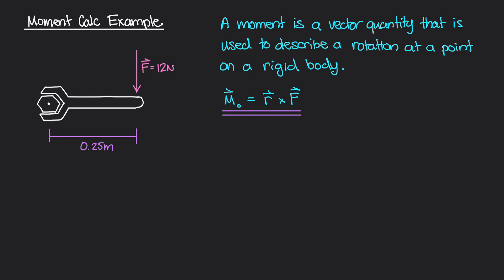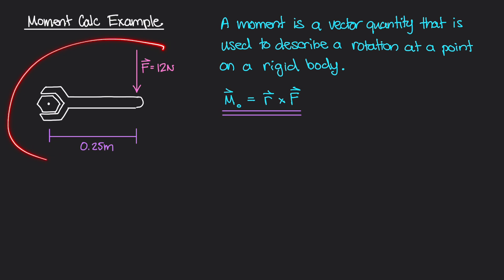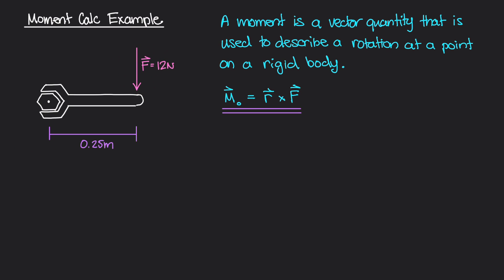In the previous video, we described what a moment was — the definition as well as the mathematical description. A moment is a vector quantity, usually caused by an external force. In the wrench example from the last video, we had a force acting a certain way. In this example, I'm going to show you how to calculate the moment that a downward force produces on this bolt right here.